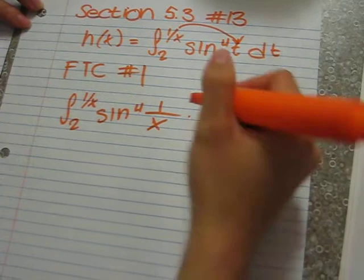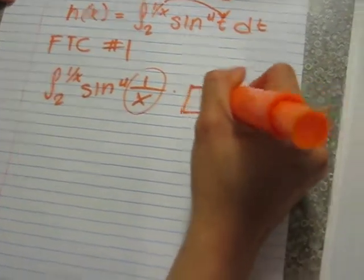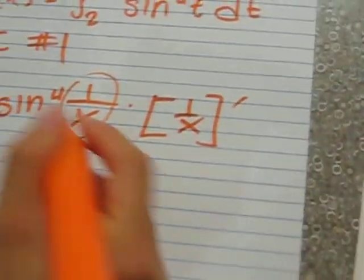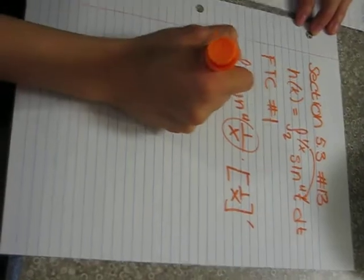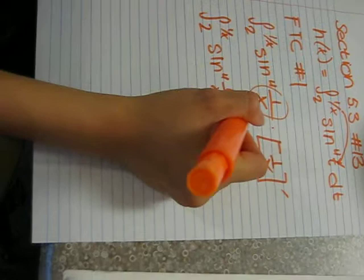And then you have to multiply this by the derivative of 1/x. And what you're going to get is that sine(4 times 1/x) is...